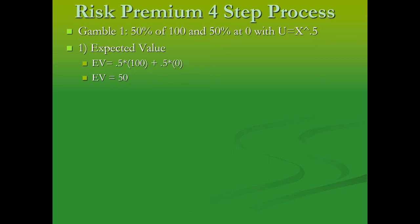At step two, you find the expected utility of the gamble. For the expected utility, take each payoff and plug it into the utility function, then multiply by the probability.